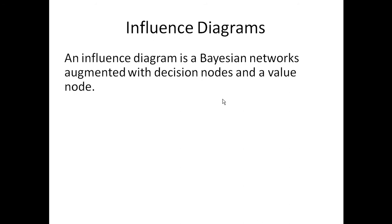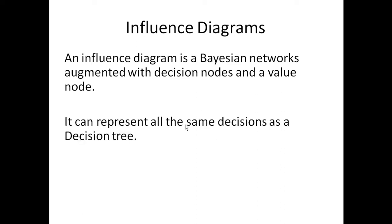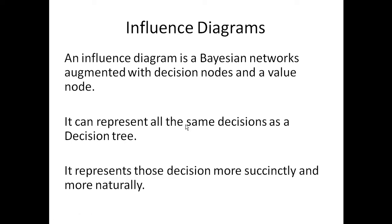That was the decision tree. The modern way to handle decision analysis is to use an influence diagram, which brings us back to Bayesian networks. An influence diagram is really a Bayesian network augmented with decision nodes and a value node. It can represent all the same decisions as a decision tree, but more succinctly and more naturally. We have algorithms that solve influence diagrams once you create them — just like backward chaining can create a decision tree on the fly, these algorithms can create and solve a decision tree on the fly. The algorithms are described in my text, Learning Bayesian Networks.